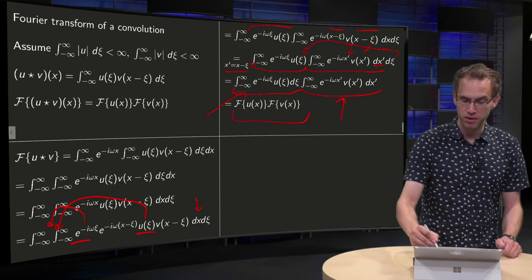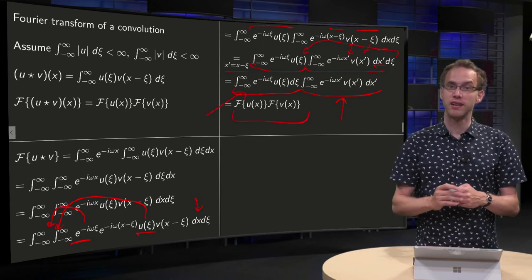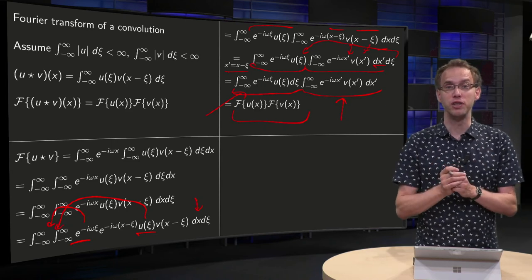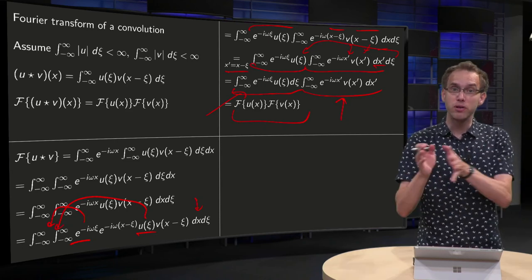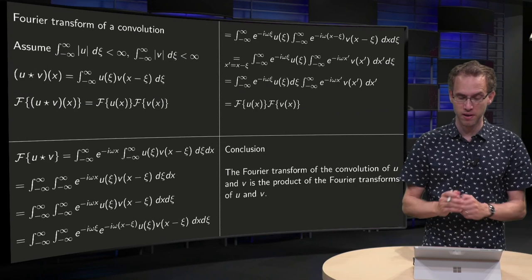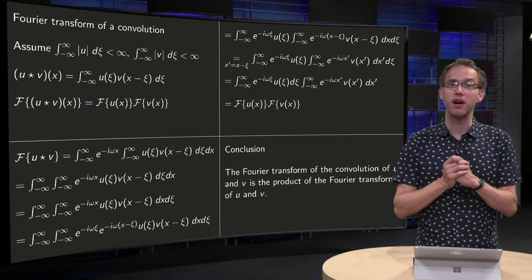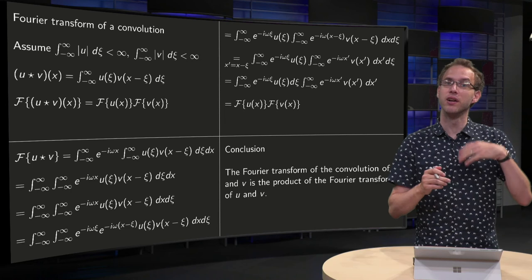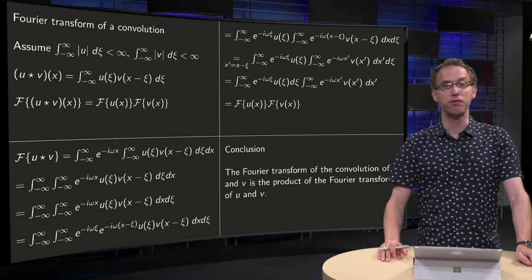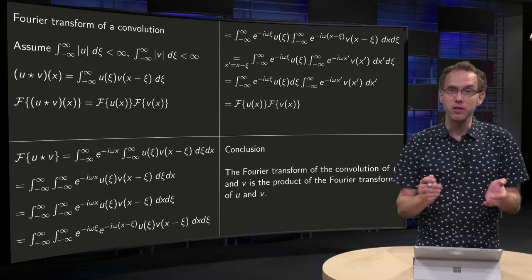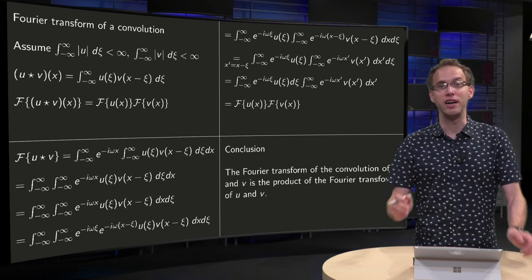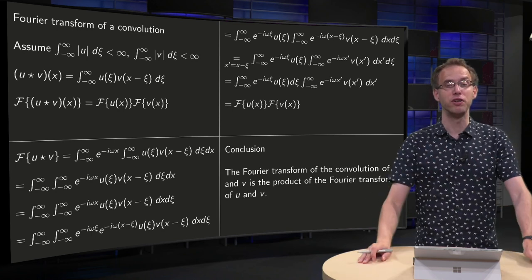So we obtained, after some manipulations, that the Fourier transform of the convolution is nicely the product of the respective Fourier transforms, and that's summarized in the conclusion over here. So after taking a Fourier transform, a convolution, which is not so nice, becomes really nice because it becomes a product of the functions.